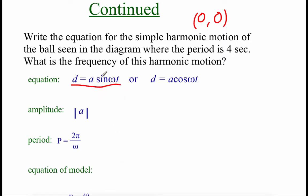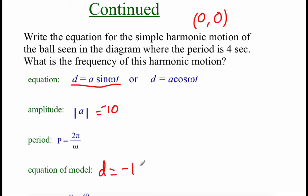We start building the equation by finding the A value and omega. The amplitude is how high and low it goes — from the picture our amplitude is 10. So |A| = 10. We need to decide if it's positive or negative 10 out in front. Since the graph went down first, and a positive A sine would go up first, we have a negative A value. So we put −10 in front of the sine.